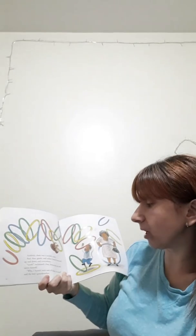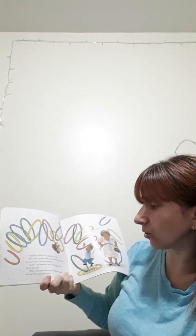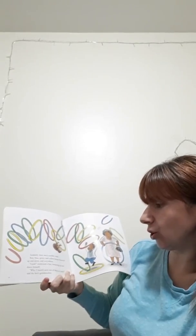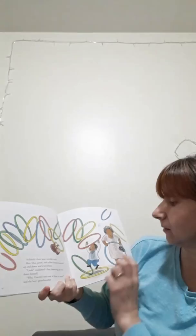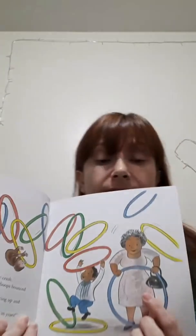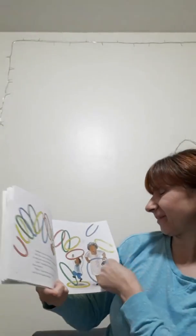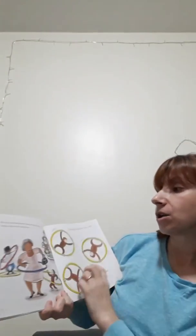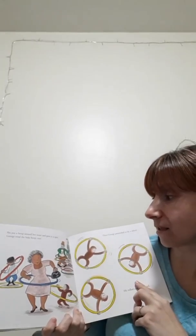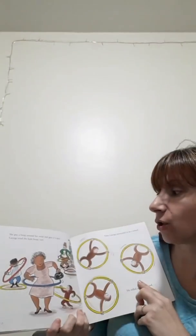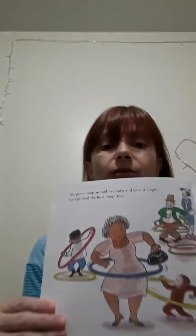Look, exclaimed the boy, bouncing up and down himself. Why I haven't seen one of these in years, said the boy's grandmother. So the boy's grandmother is really familiar with the hoops. This is how they work. You just hula hoop them around your body. She put a hoop around her waist and gave it a spin. George tried the hula hoop too. Look at this.